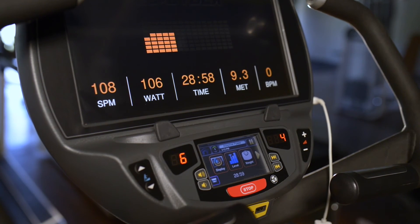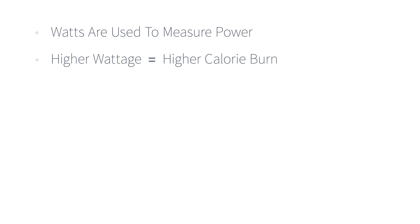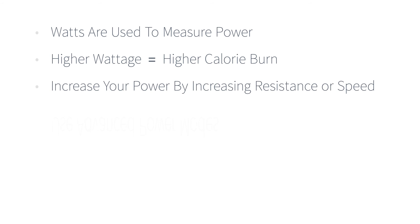This is the program you want to use if you want to see your power level skyrocket. To recap: watts are used to measure power; working at a higher wattage means higher calorie burn and more focus on strength and power development. Increase your power by increasing the resistance or speed while on the arc trainer, or use one of the advanced power modes to take your training to the next level.